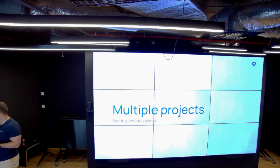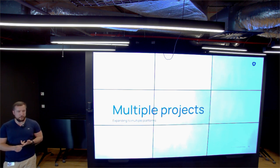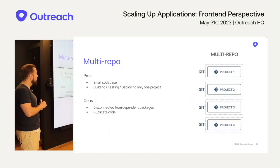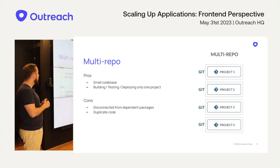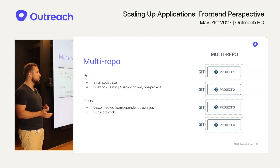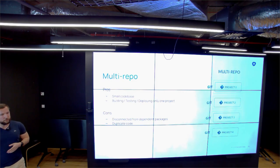You can use a multi-repo approach, where every project has its own Git repository. The pros are a small code base — you build, test, and deploy only the one project you're working on. The cons are it's disconnected from your whole environment. If you want to use the same UI library and styles in the extension, you don't have it — you need to copy it, replicate it, go through NPM packaging and versioning, and it can get really messy or you can end up duplicating code.